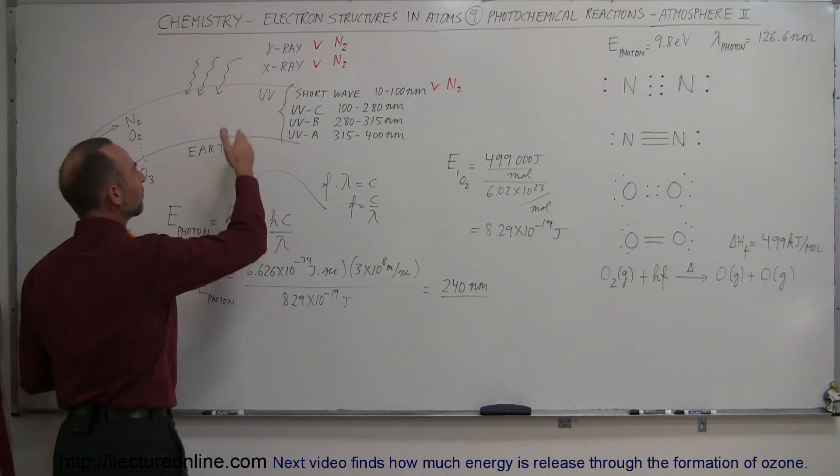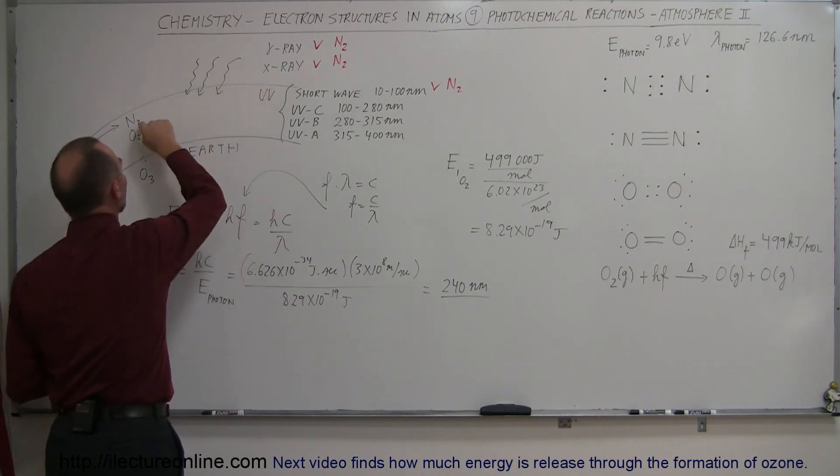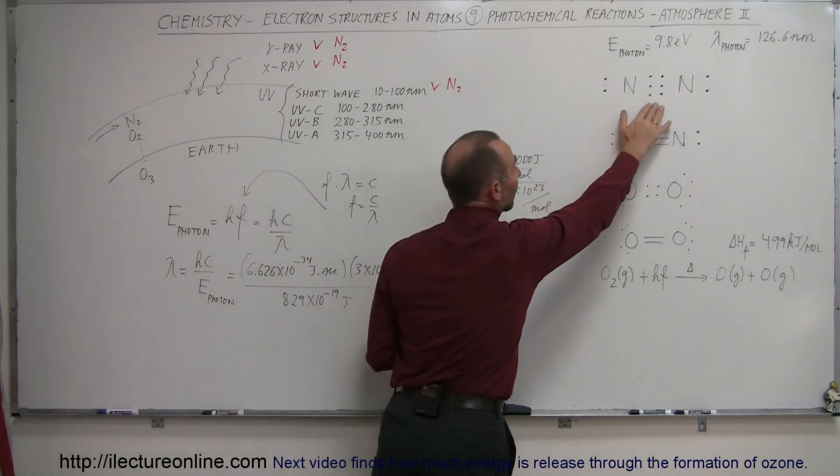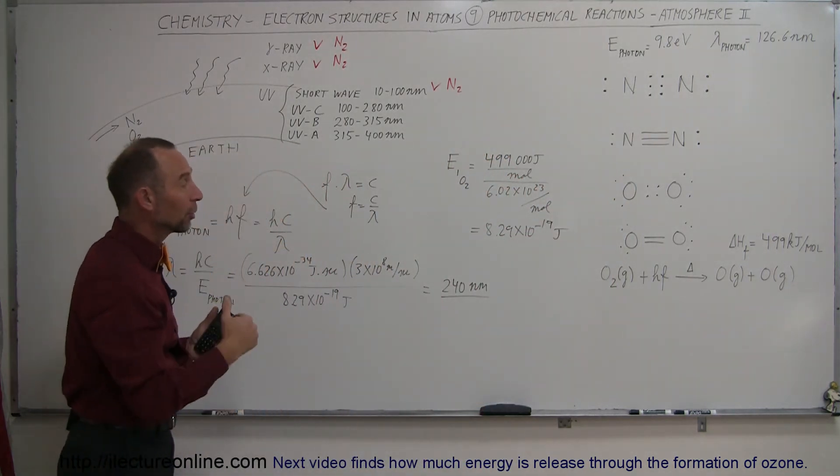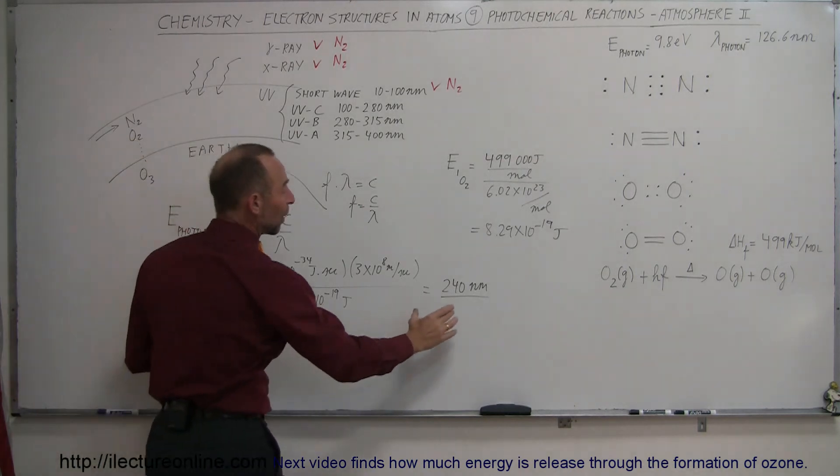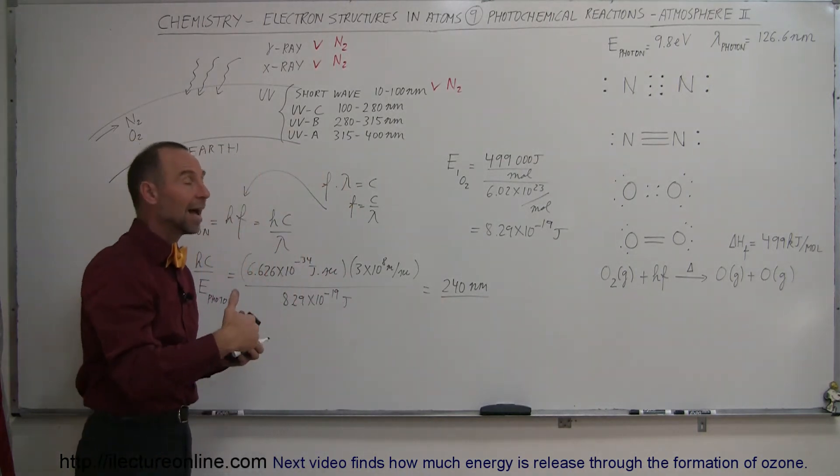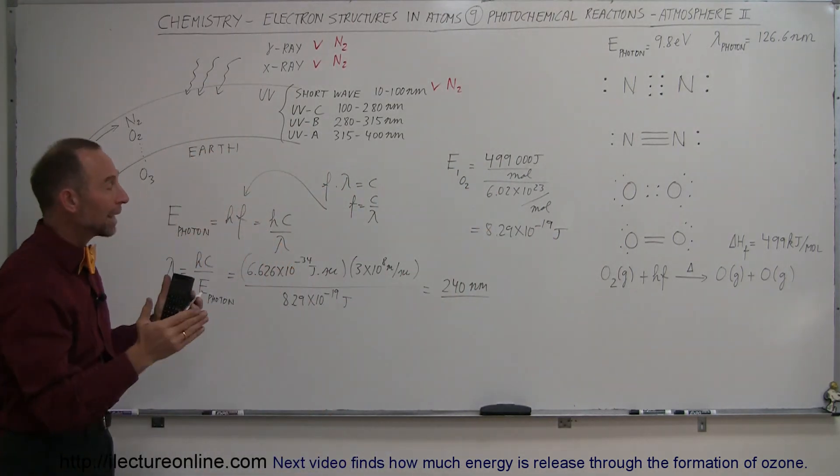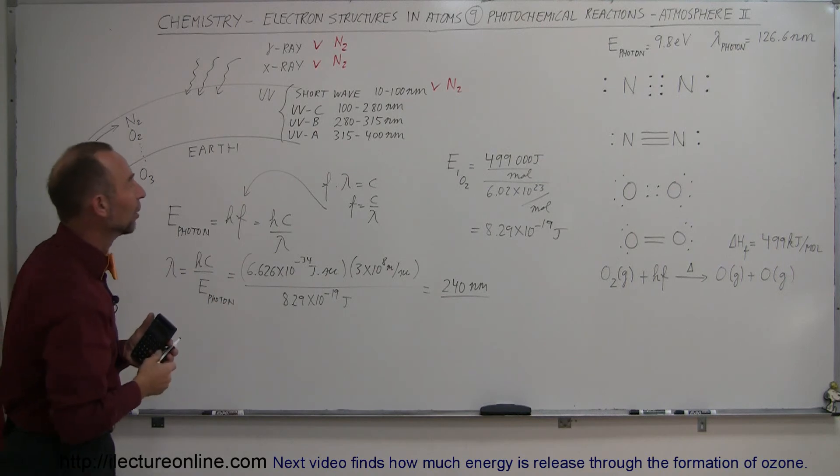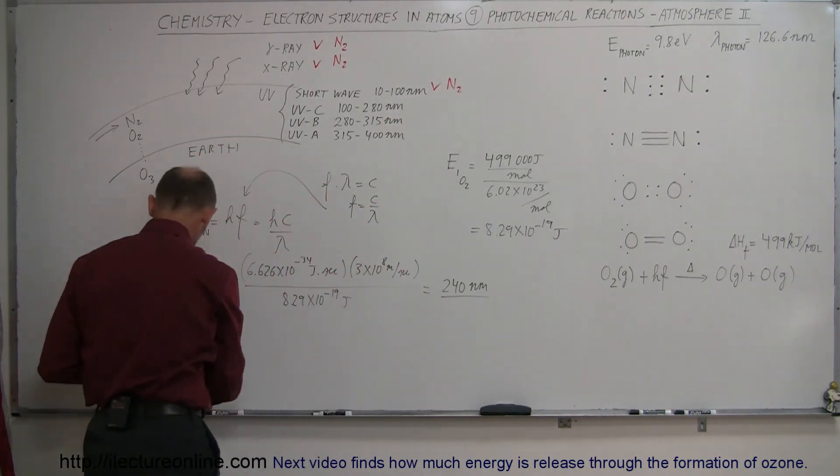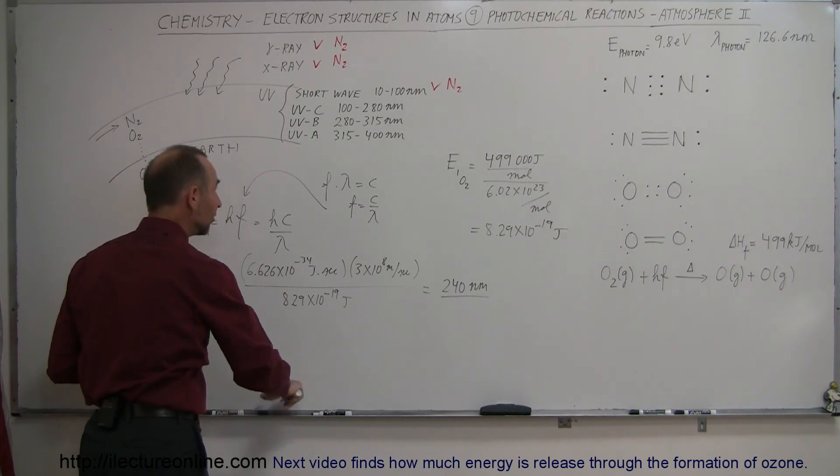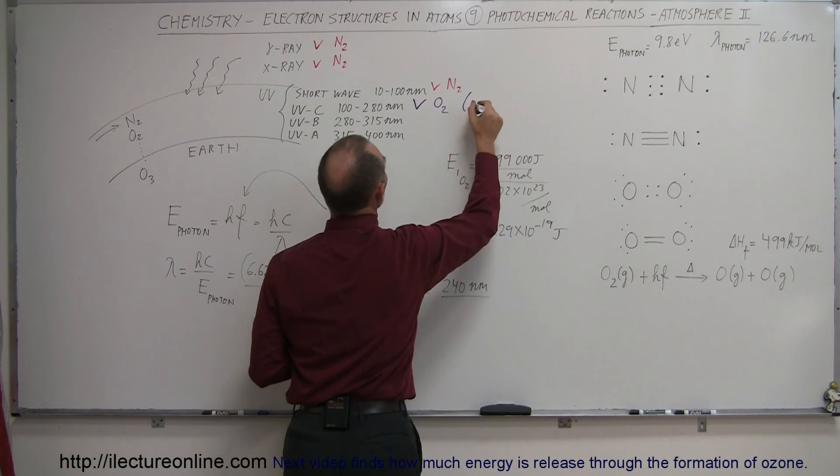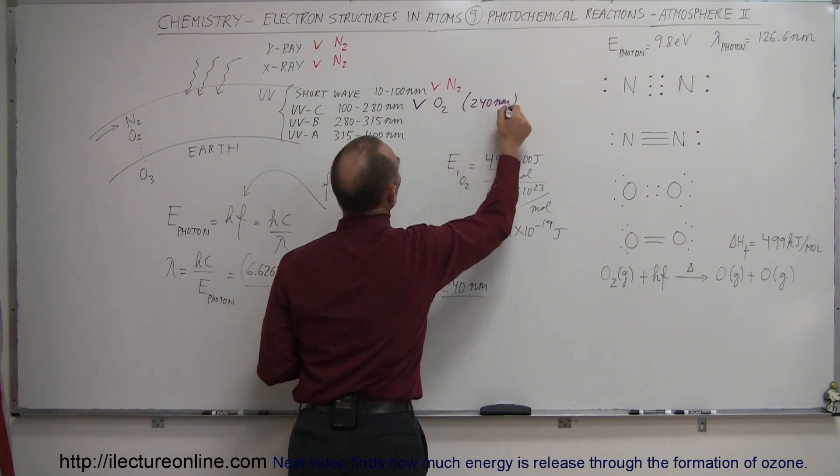any photon that makes it through the atmosphere and doesn't interact with the nitrogen atom because it did not have enough energy to break up the triple bond of nitrogen will go through, and if it has a wavelength of 240 nanometers, in other words energy high enough to dissociate oxygen gas, it will hit an oxygen molecule, break it up, and get absorbed that way. So that means part of this will be absorbed by the oxygen atoms, down to 240 nanometers.